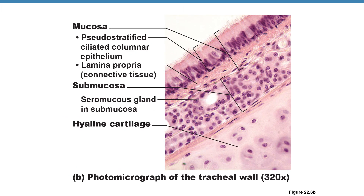On the histological slide of the trachea, you can see the mucosa with the epithelium and lamina propria of areolar connective tissue, the submucosa with glands, and the adventitia with hyaline cartilage.